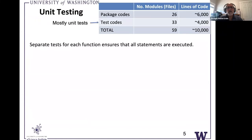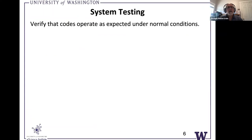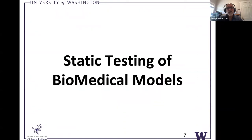Unit testing covers mostly unit tests where we're picking up references to the functions — those are the units. And this is an example of a system test where you test it: in this case, SBstoat was tested against all the models — I think 800 or so models in BioModels — which is really sort of analogous to the cross-validation end-to-end tests for a biological model. What I'm going to do now is spend some time on what I think will be a little puzzling to folks: what does it mean to do static testing of a biomedical model? Let's go through a real simple example and see if this makes sense.